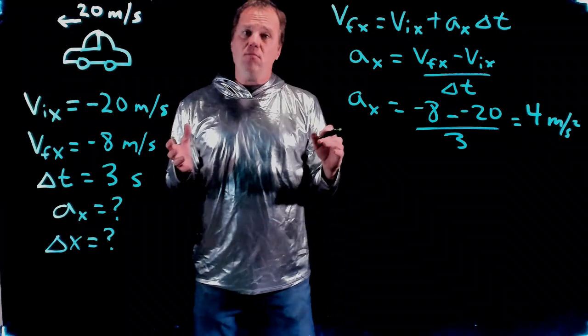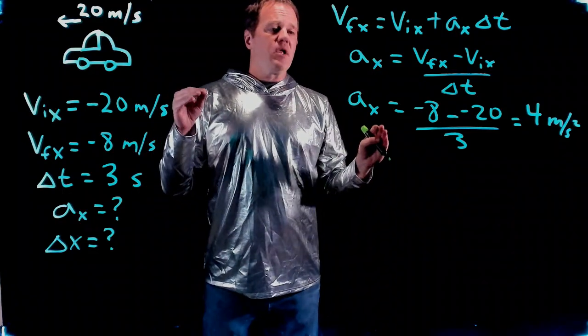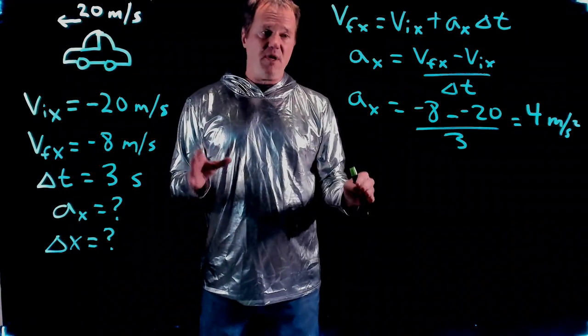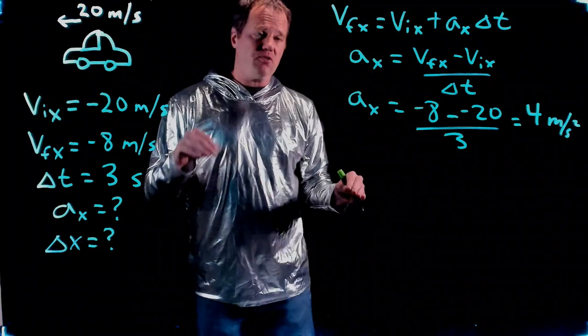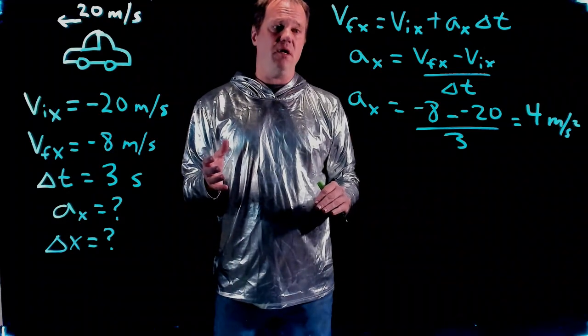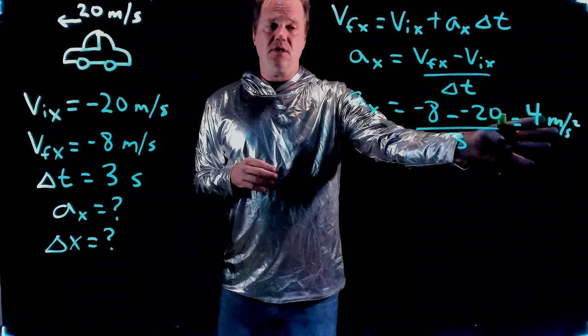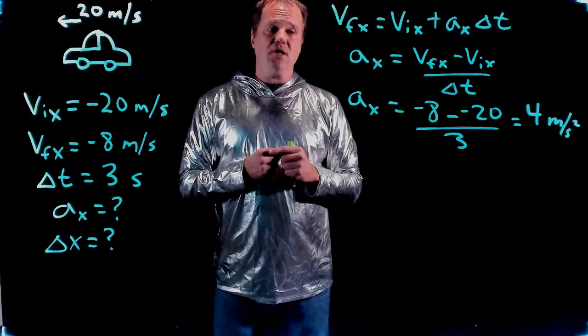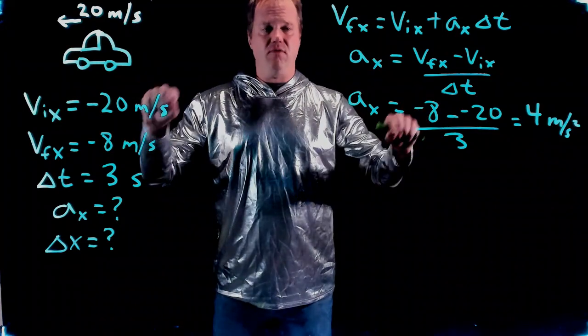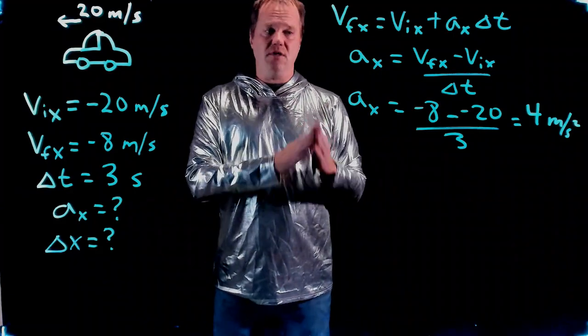That might seem weird - positive acceleration while slowing down. But the sign of the acceleration doesn't tell you whether something is speeding up or slowing down. It's the relationship between the direction of the velocity and the direction of the acceleration. The velocity is to the left, negative. The acceleration is to the right, positive. They are opposite directions, which means slowing down. Same direction would mean speeding up.